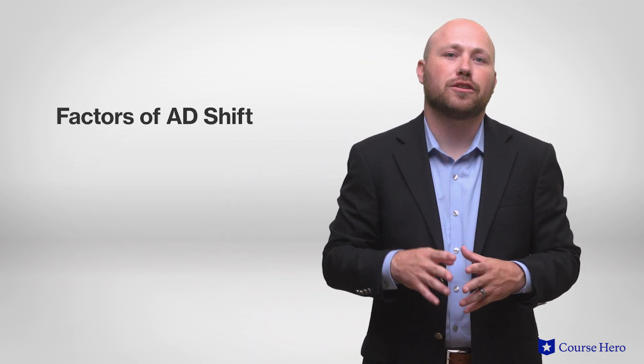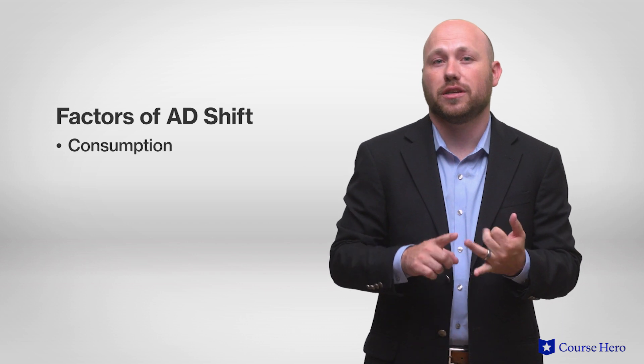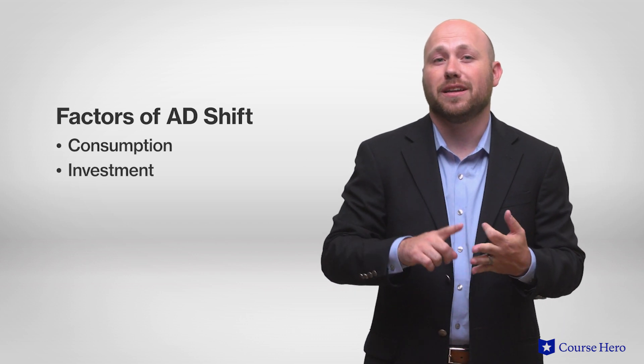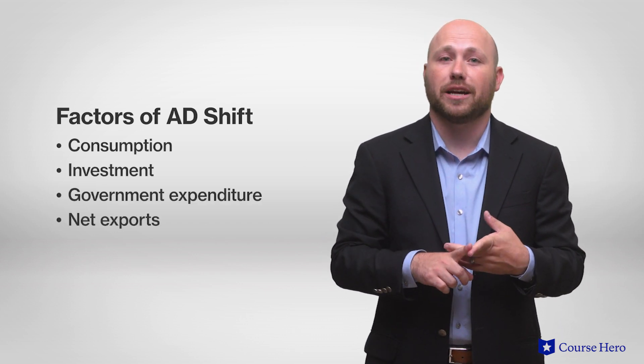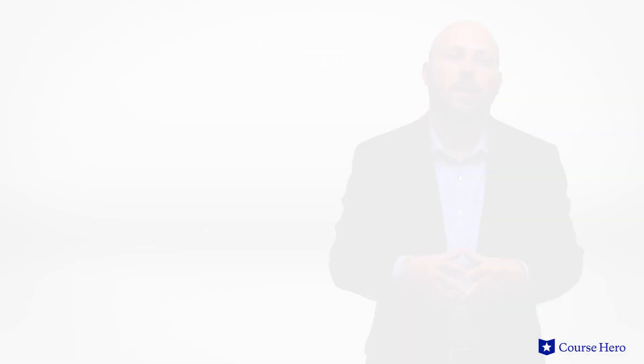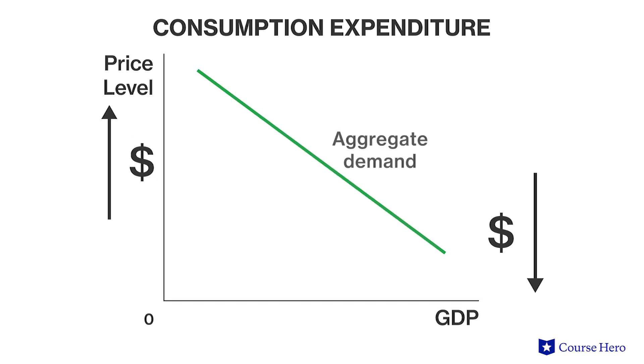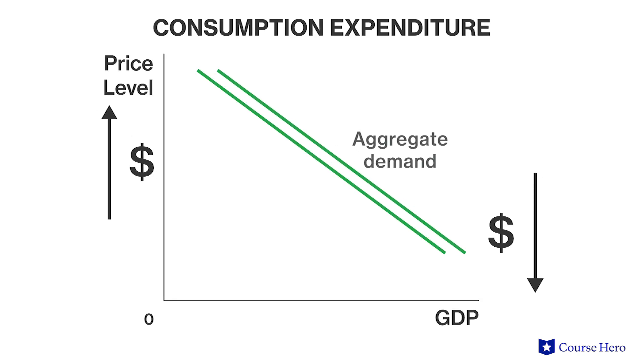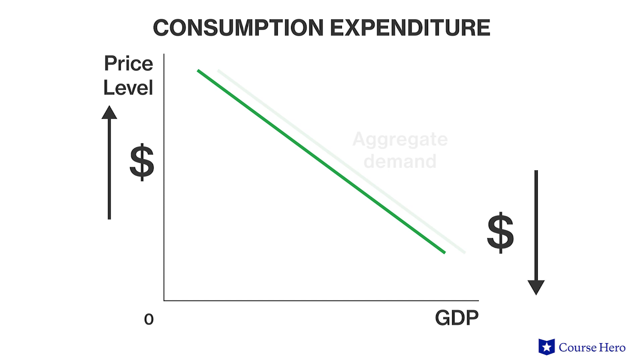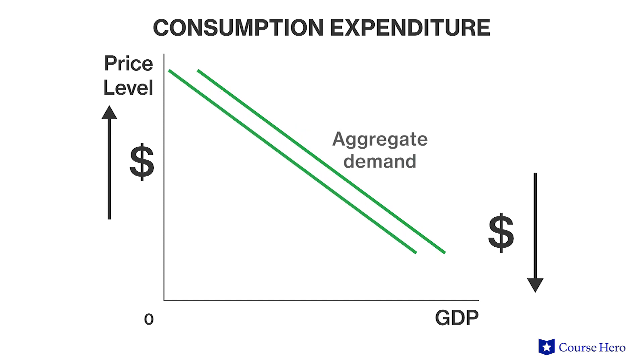Shifts in the aggregate demand curve can be caused by changes in any of the components of aggregate demand, but not by changes in the price level. The four factors that cause the aggregate demand curve to shift are changes in consumption, investment, government expenditure, or net exports. When consumption expenditure increases, the aggregate demand curve will shift to the right. When consumption expenditure decreases, the aggregate demand curve will shift to the left.